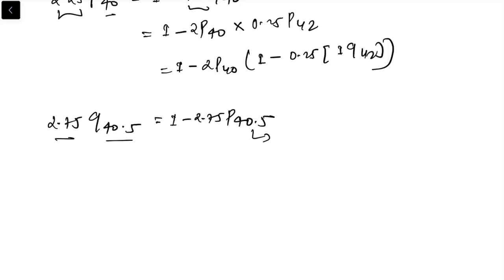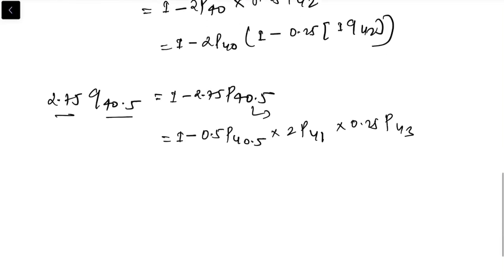Now what should we do? Let's first break this down using the principle of consistency. So this is 1 minus 0.5 p40.5 times 2 p41 times 0.25 p43. Now we can find out this value as well as this value, but we don't know how to do this because x is not the integer age.